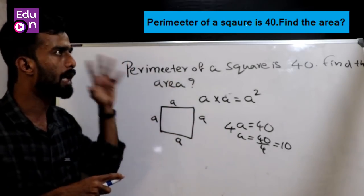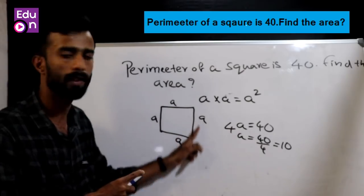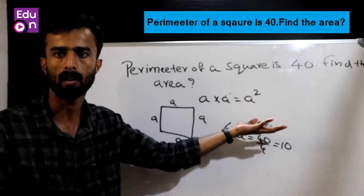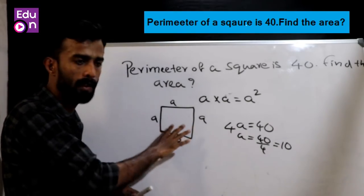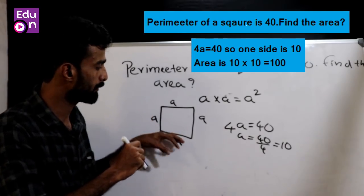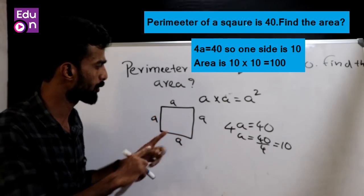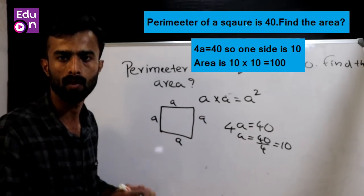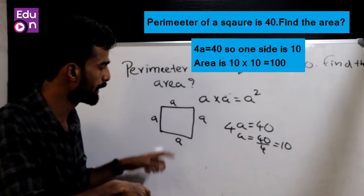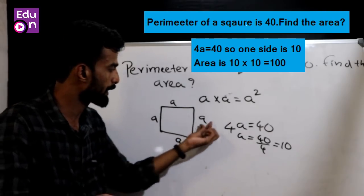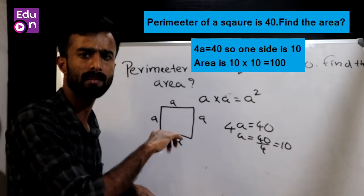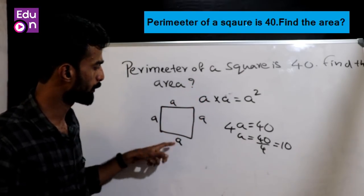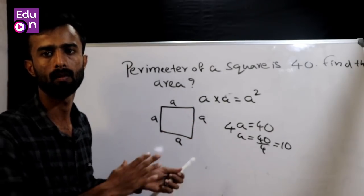The side length is 10. The area of a square equals side squared, which is A squared. So the area equals 10 times 10, which equals 100. The answer is 100.